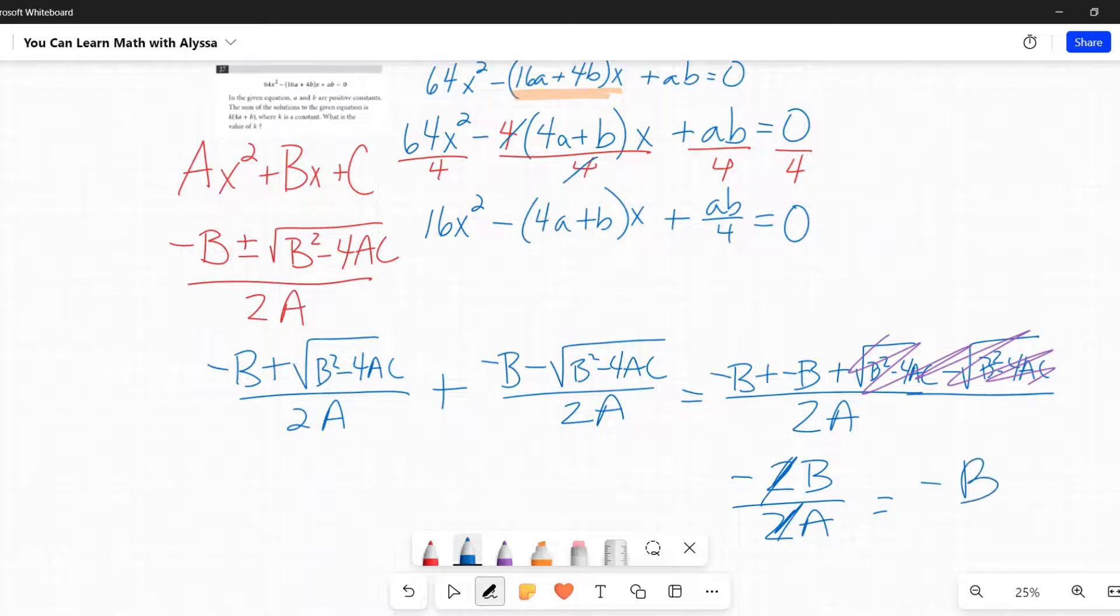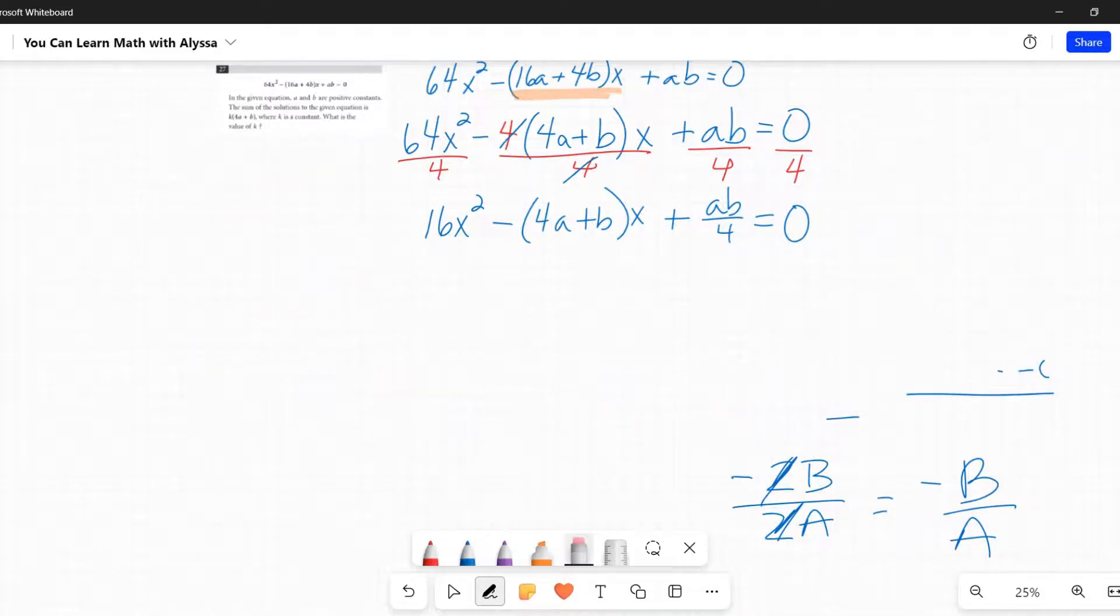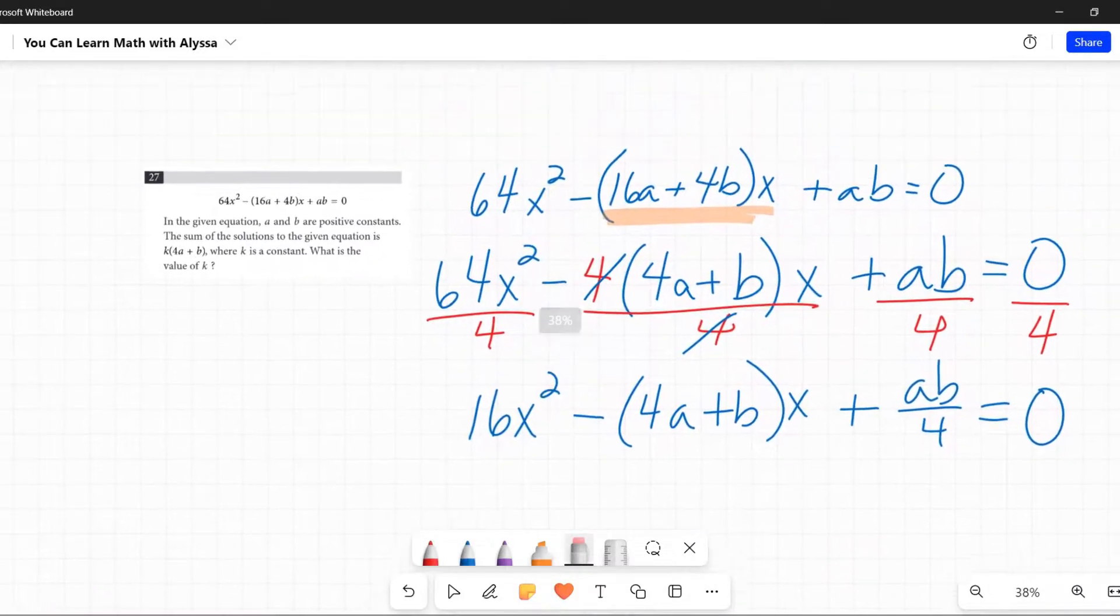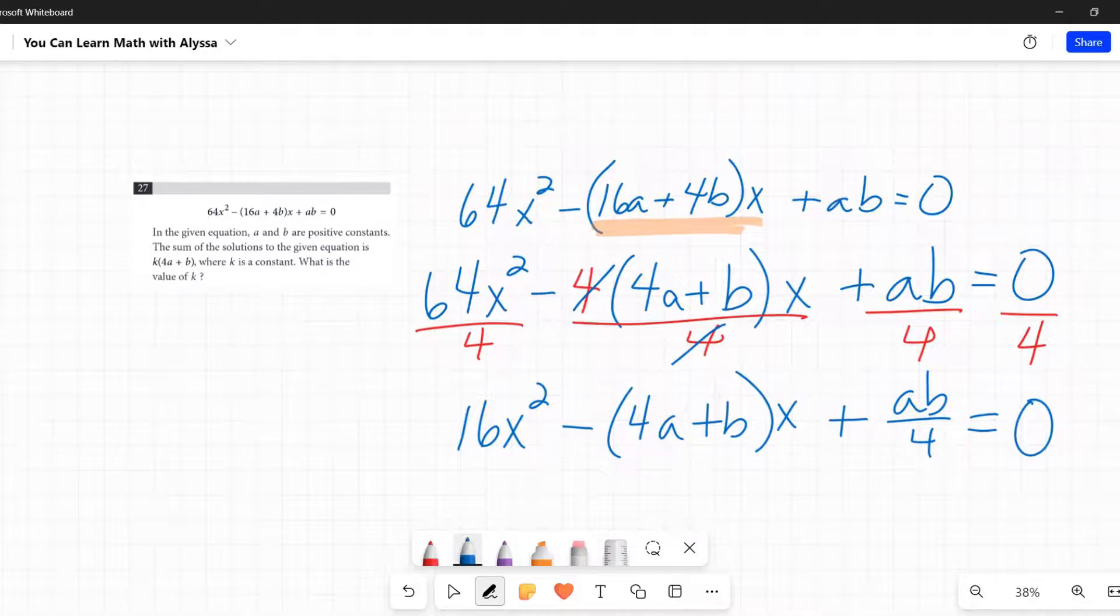So what that is saying is that for any quadratic equation, if I find the solutions and then add them together, I will get a negative version of this middle coefficient divided by or over the first coefficient: -B over A. Okay, so I'm going to erase all of this that we just used to solve that or to figure that out. And it's -B over A. And I'm going to zoom back in, I'm going to go back up here, and I'm going to write sum is equal to -B over A.